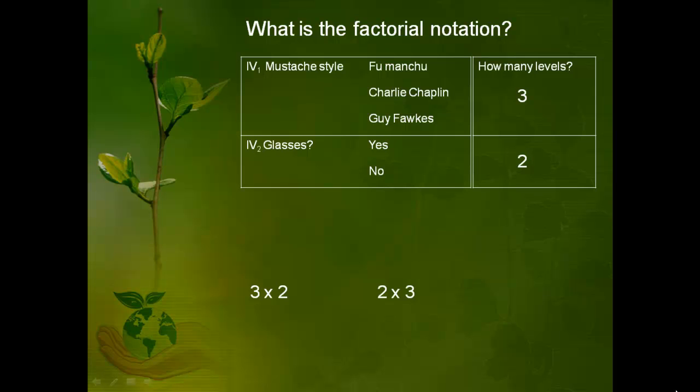You could also call it a two by three study. When you're talking about the factorial notation, it doesn't matter how you order the numbers within the factorial notation — all that matters is they're in there. So you could say it's a three by two, or you could say it's a two by three, and both would be correct.